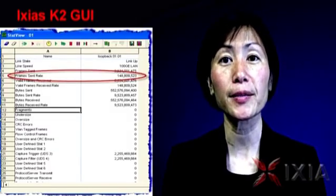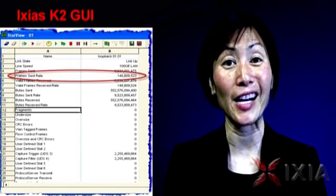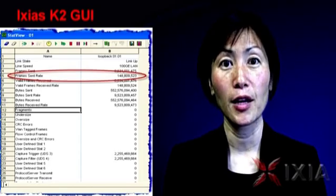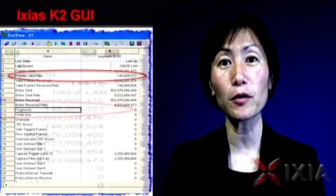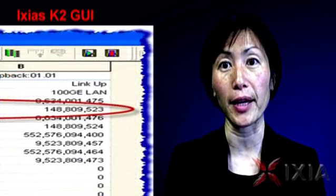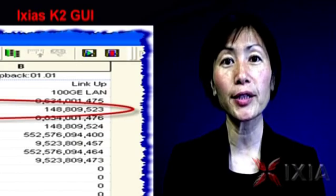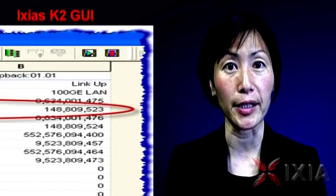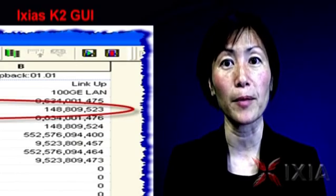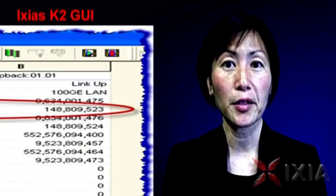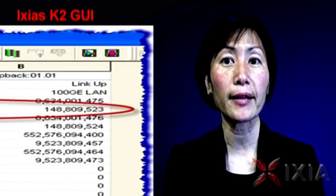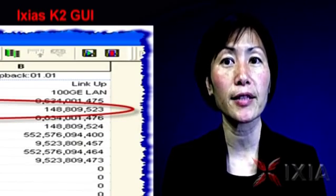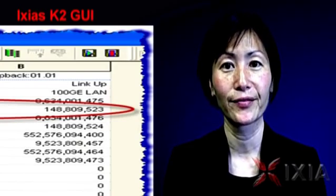This is a view of our 100 gig hardware, K2, which is transmitting 64 byte packets at 100 gig. Notice the 148,809,523 rate. As you can now appreciate, that rate is the line rate for 100 gig for 64 byte packets — in other words, one packet every 6.72 nanoseconds.